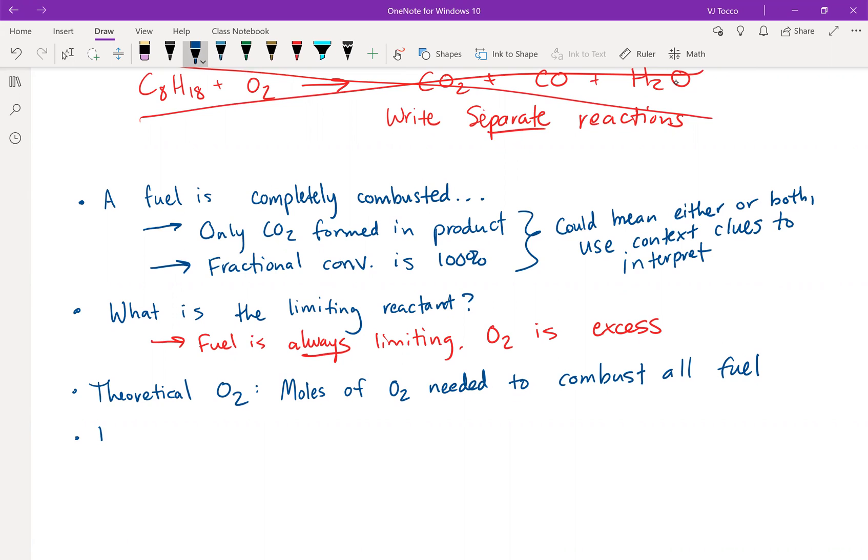You could also calculate theoretical air because it would never make sense in a combustion reaction to feed pure O2. Once again, because pure O2 costs money. I would have to buy that from a company that separates O2 from the air. This is the amount of air that contains the theoretical O2.